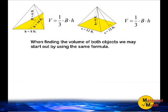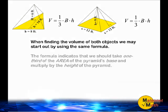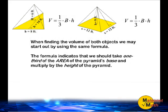To find the volume of a triangular pyramid as well as a square pyramid, we may use the formula volume is equal to one-third multiplied by the area of the pyramid's base multiplied by the height of the pyramid.